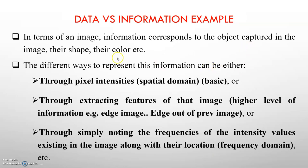Now let us talk about what is the data and what is the information with respect to the image. Because we are talking about image compression, we need to identify what is data and what is information in the context of an image. In terms of an image, the information corresponds to the objects captured in the image — their shape, their color, etc. Suppose you are standing and I click your photo — the whole thing captured, you and the background, is the information.